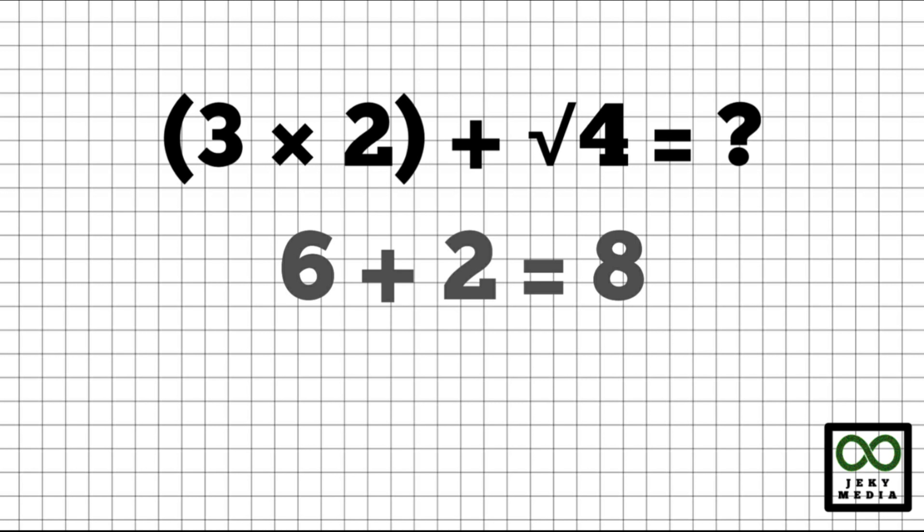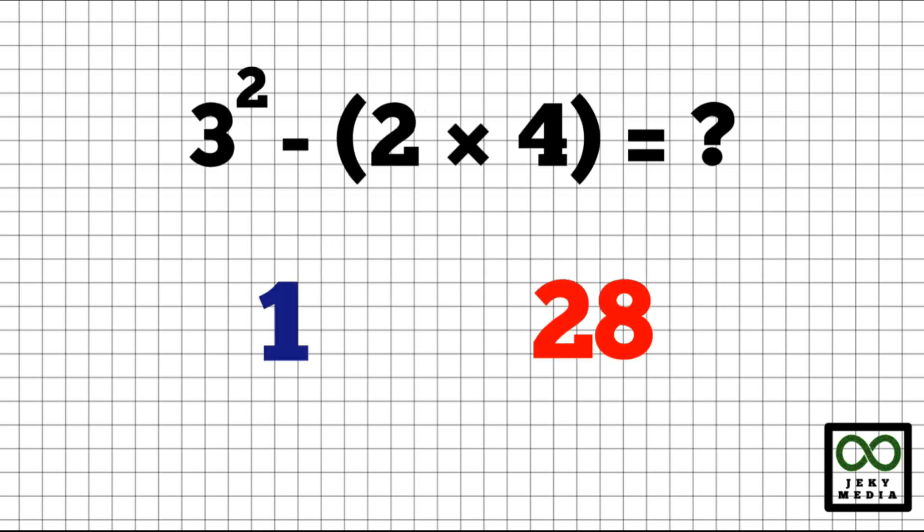We have 3 times 2, that is 6. And the square root of 4 — a square root can be expressed as an exponent of one-half. The square root of 4 is 2. We have 6 plus 2, and the answer is 8. Wow! You did it!